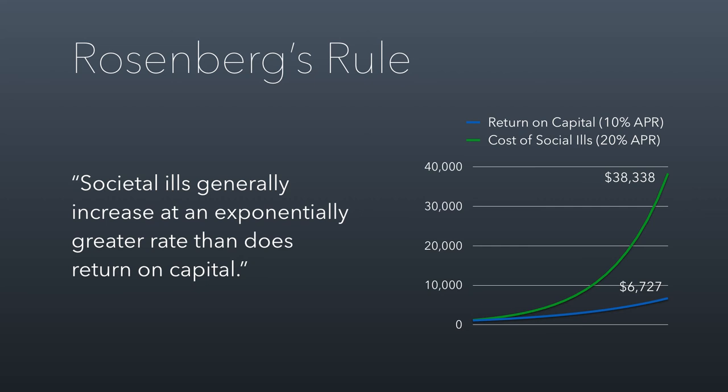This illustrates what happens if we don't solve problems today — they tend to grow faster than invested dollars do. So as a general rule, where a nonprofit is having impact, it is better to give today than later with invested money. The thousand dollars today has a higher impact than the $6,700 does 20 years from now. In fact, you would have had to come up with another $32,000 to make up the difference. This is an important concept with altruism because our instinct to give today is actually economically supported — Rosenberg's rule is right, that social problems tend to grow faster than the return on investment does.